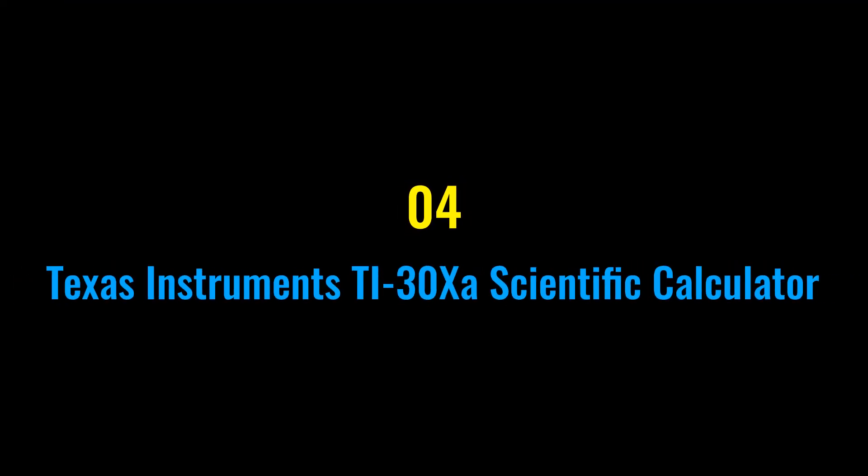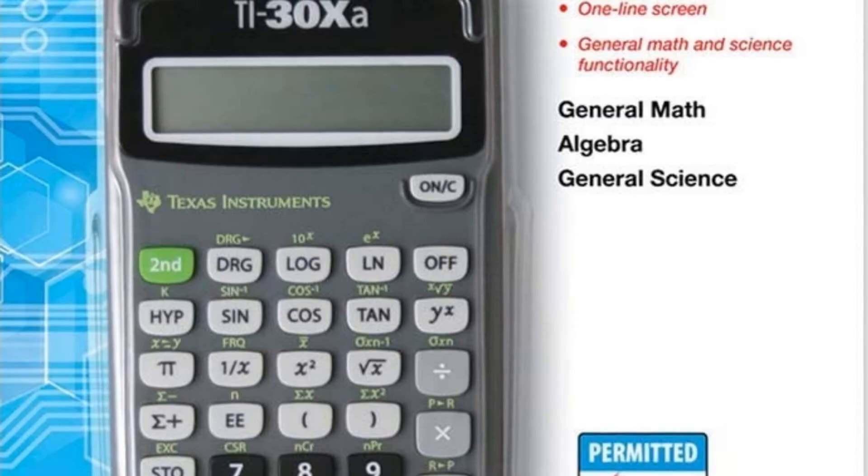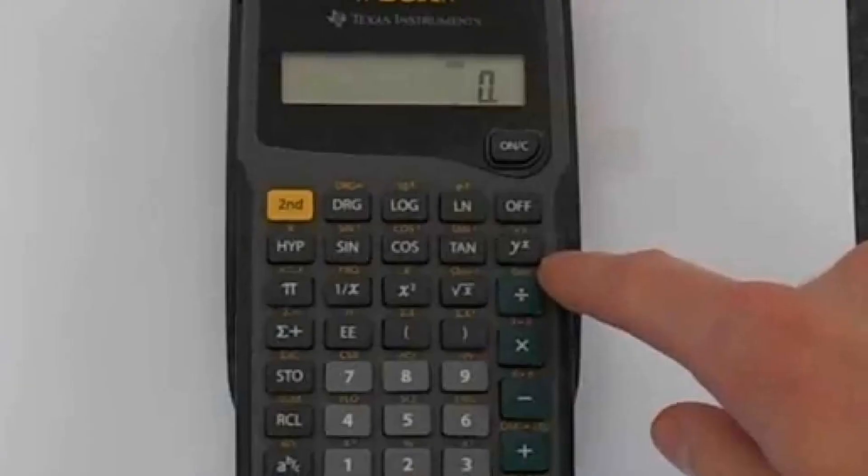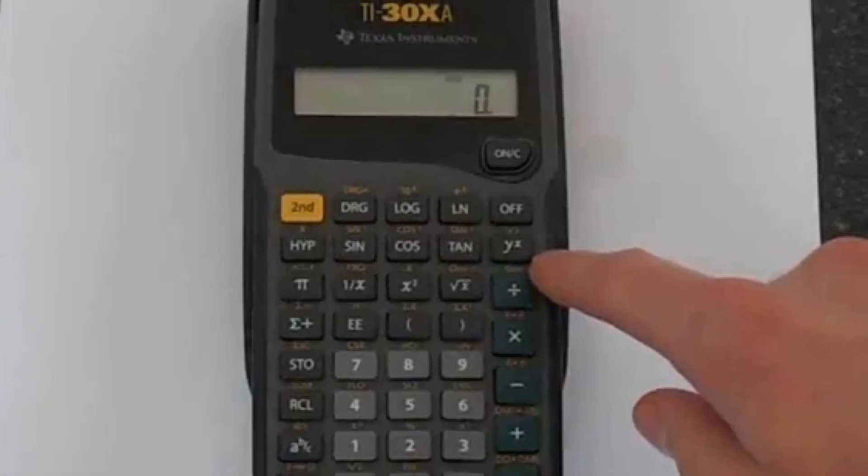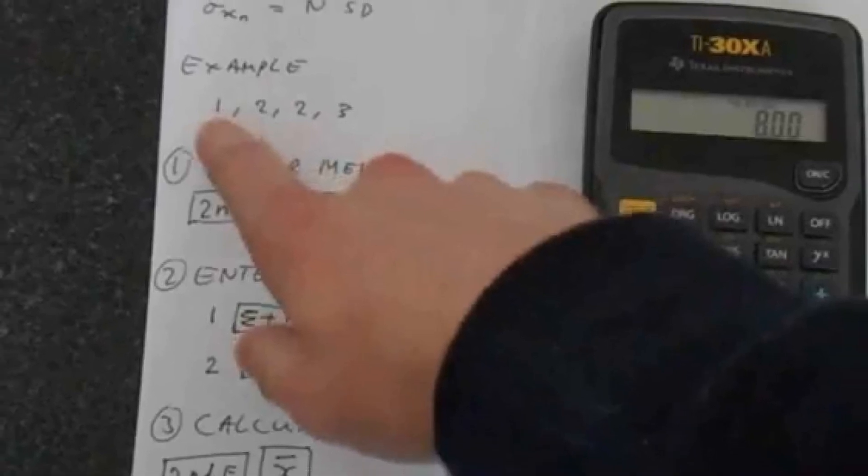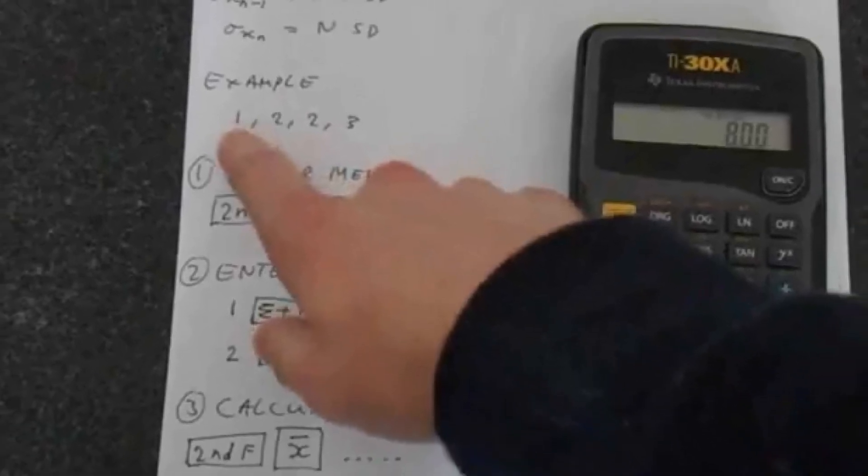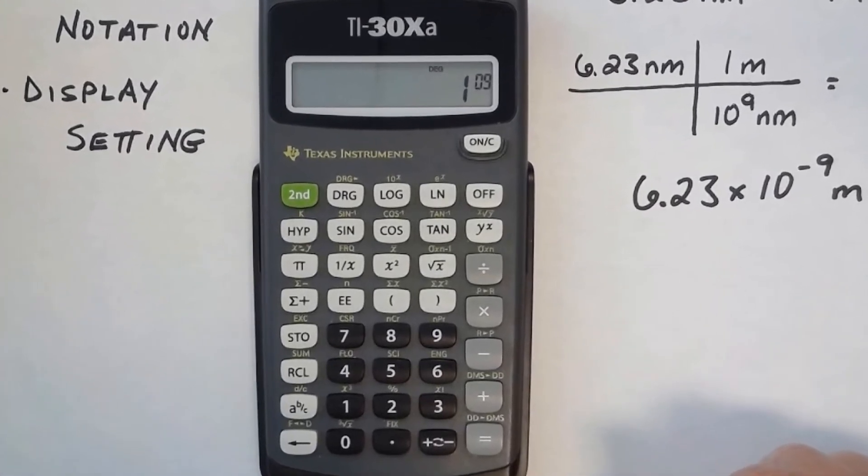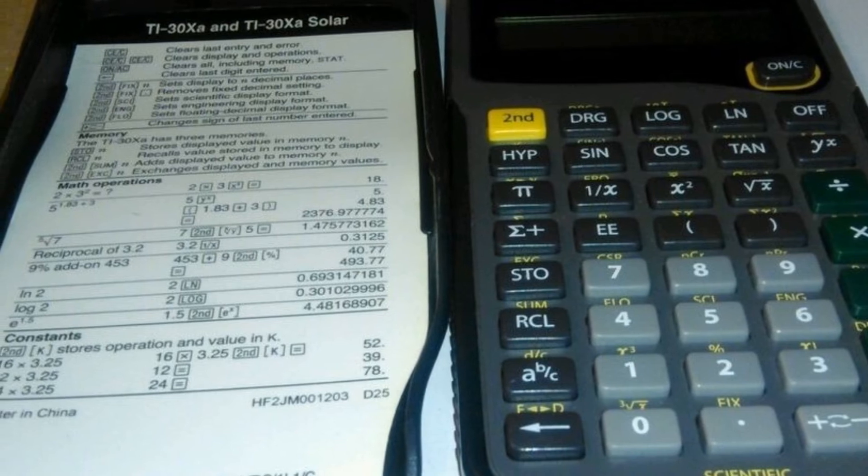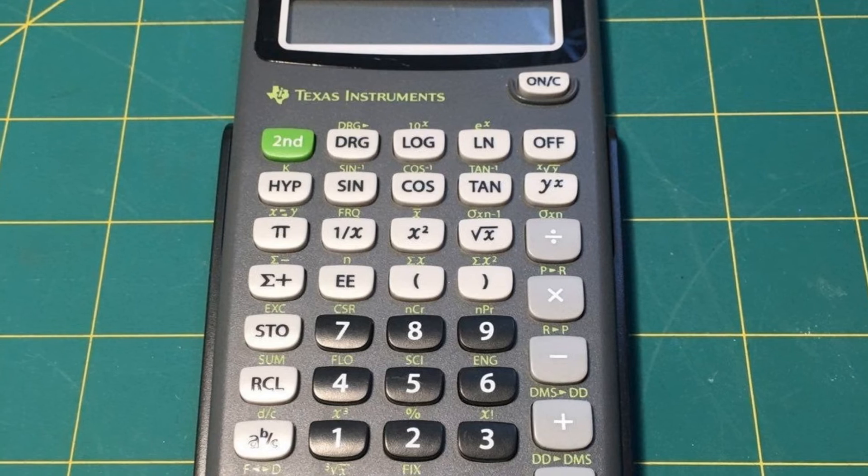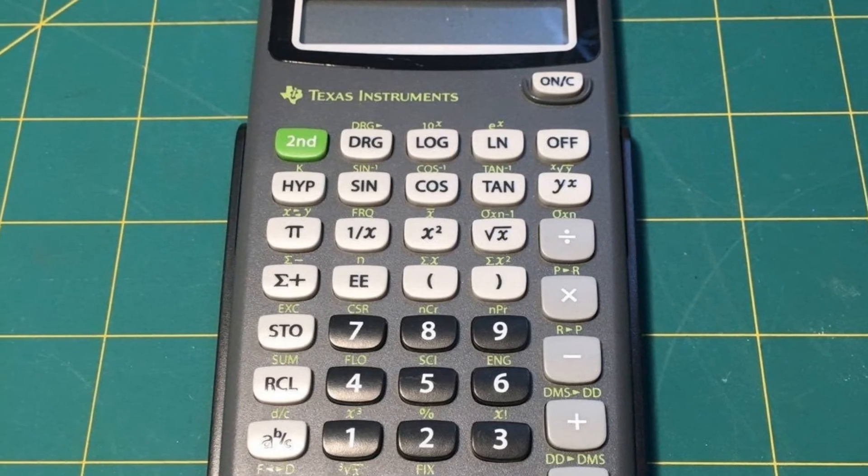Number four: Texas Instruments TI-30XA Scientific Calculator. Basic battery-operated scientific calculator with one-line display and general math and science functionality. Key features: one-line ten-digit display, fraction features, one-variable statistics, conversions, basic scientific and trigonometric functions. Ideal for general math, pre-algebra, algebra 1 and 2, and general science.